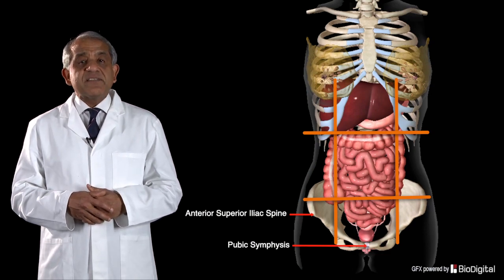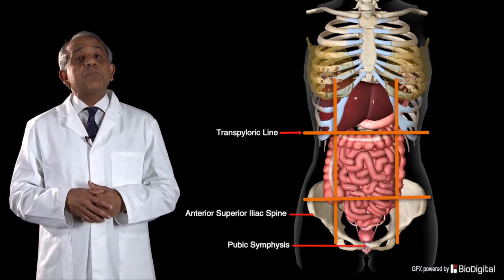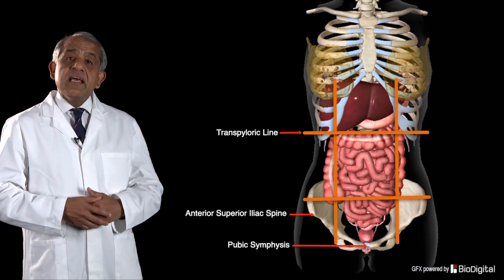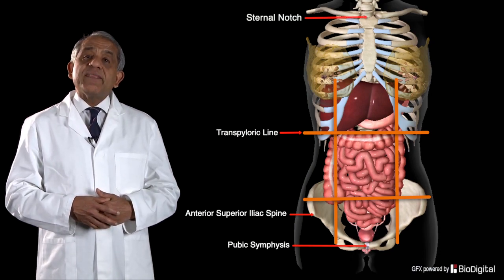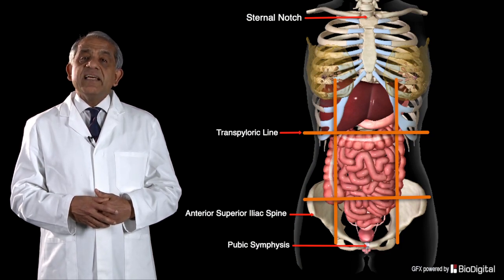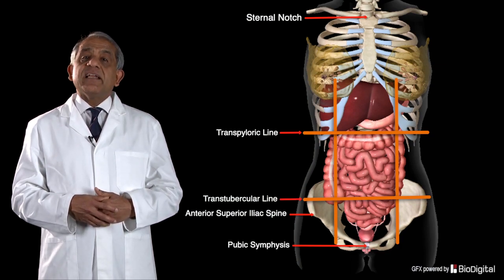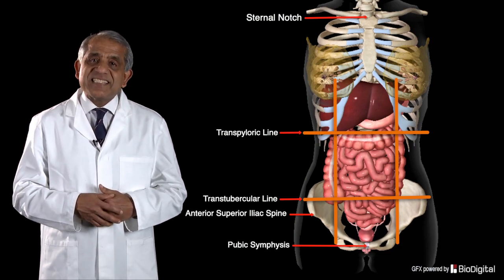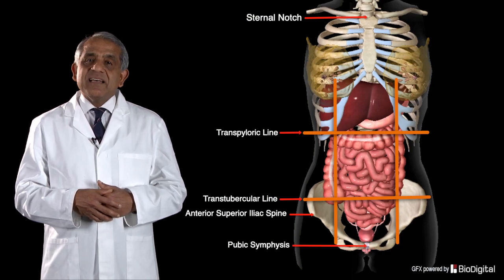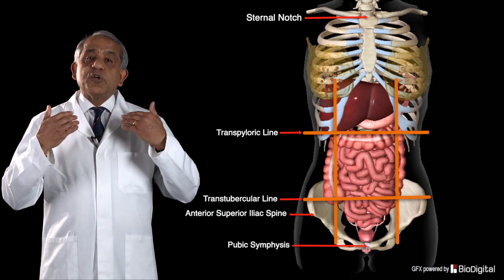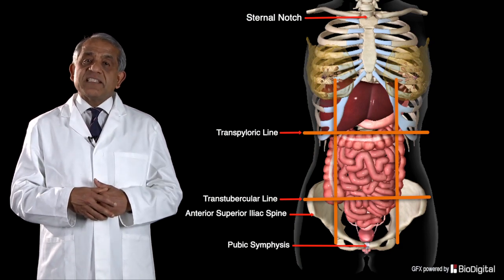The two transverse lines are the transpyloric line, or transpyloric plane, which is plotted halfway between the sternal notch and the pubic symphysis. The other transverse line is called the transtubercular line, plotted at the level of the tubercles of the two iliac crests. Thus we have nine regions from drawing these two vertical and two transverse lines.